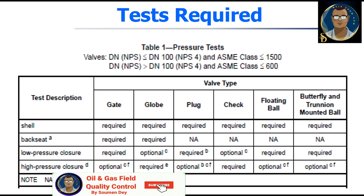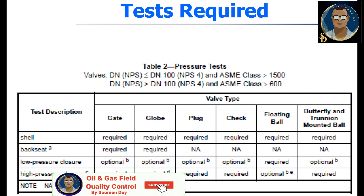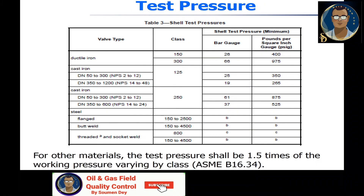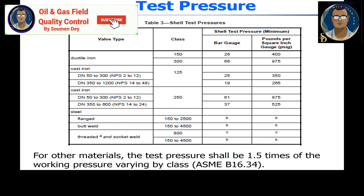Table 2 is a similar reference table — you can pause the video to take a snapshot. For the test pressure, Table 3 shows the shell or body test pressure. For example, NPS 2 to 12 inch at class 125, the shell test pressure minimum should be 25 bar, which is 350 psi. For other materials, the test pressure shall be 1.5 times the working pressure, varying by class per ASME B16.34.